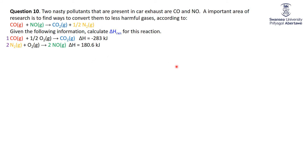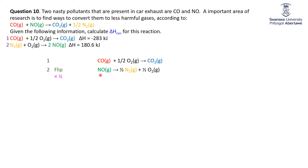I want CO on the left — equation 1 already provides that, and it also gives CO₂ on the right. For equation 2: I want ½N₂ on the right, but equation 2 has a whole N₂ on the left; or equivalently, I want NO on the left but equation 2 has 2NO on the right. Either way, I must flip and halve equation 2. Doing so gives NO on the left, ½N₂ on the right, and ½O₂ on the right. Adding equations 1 and the modified 2, the O₂'s cancel out.